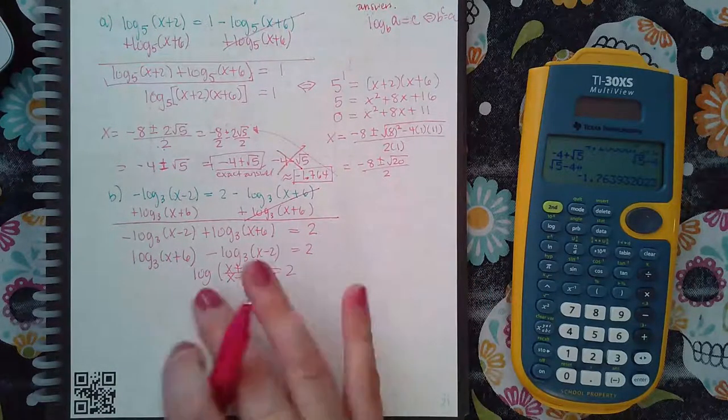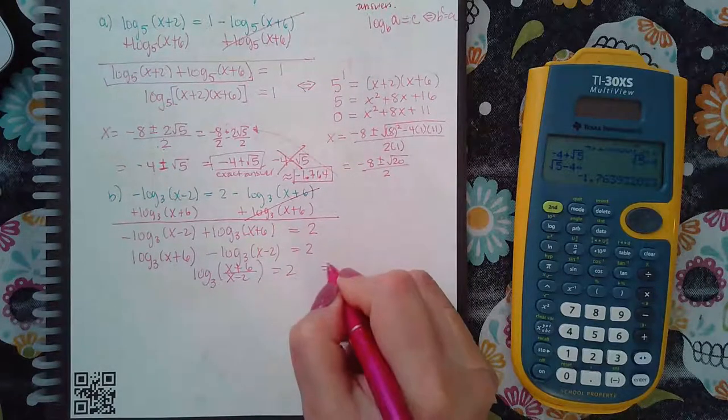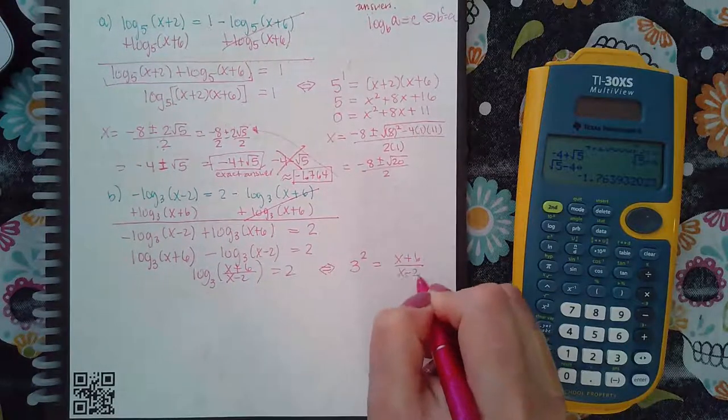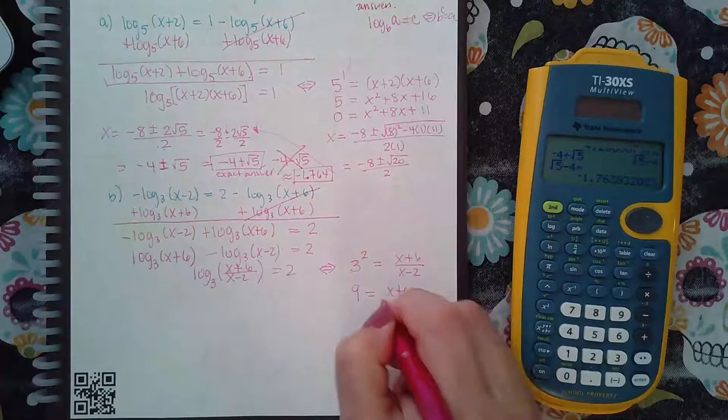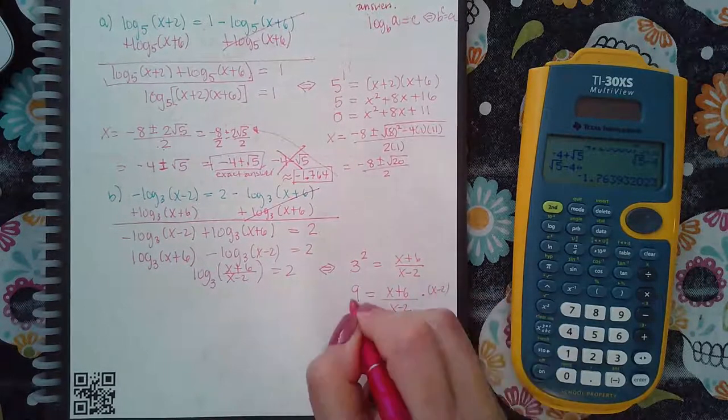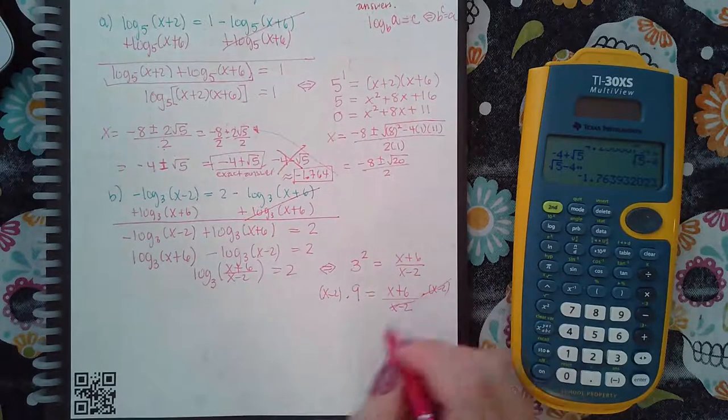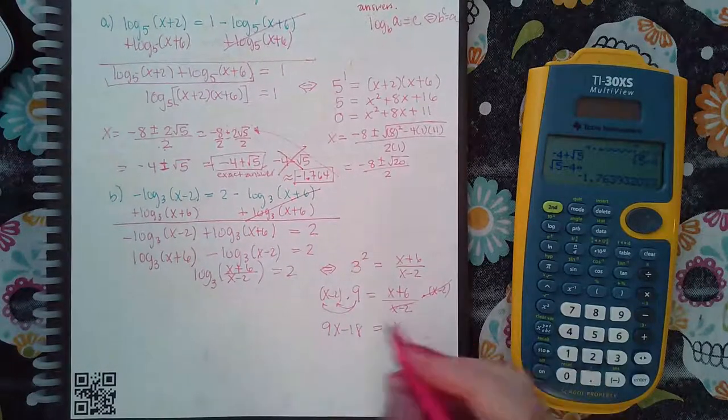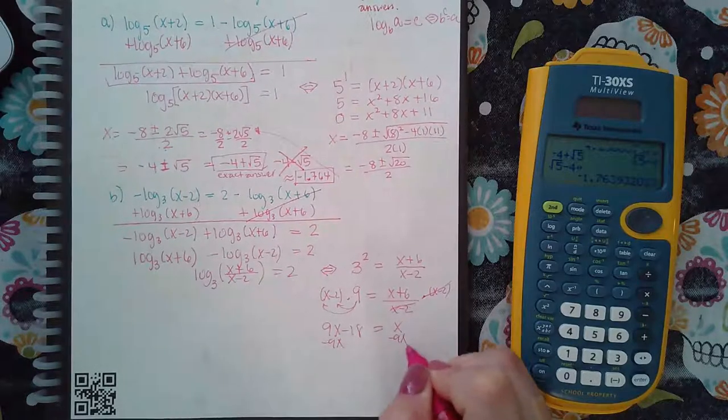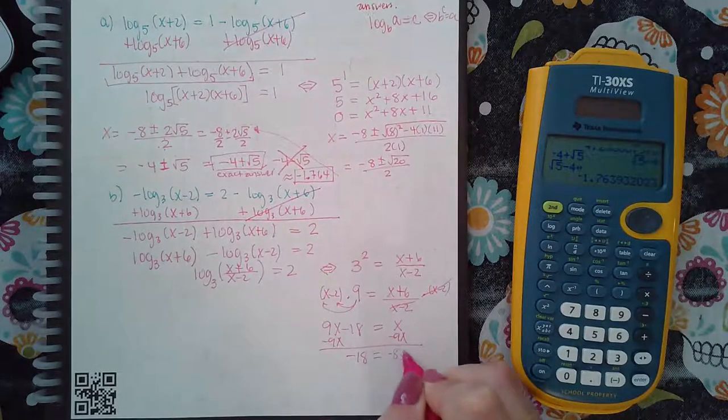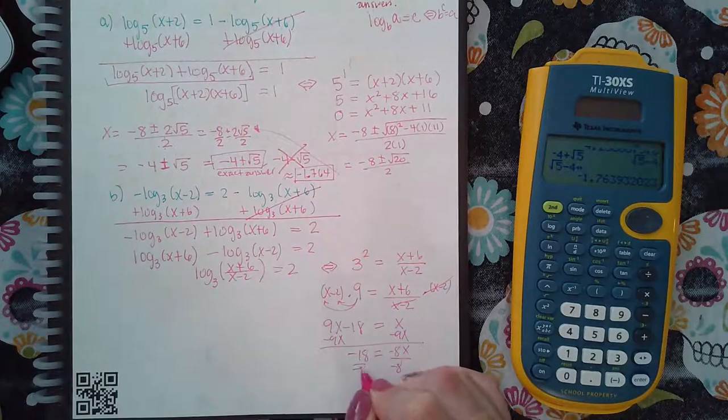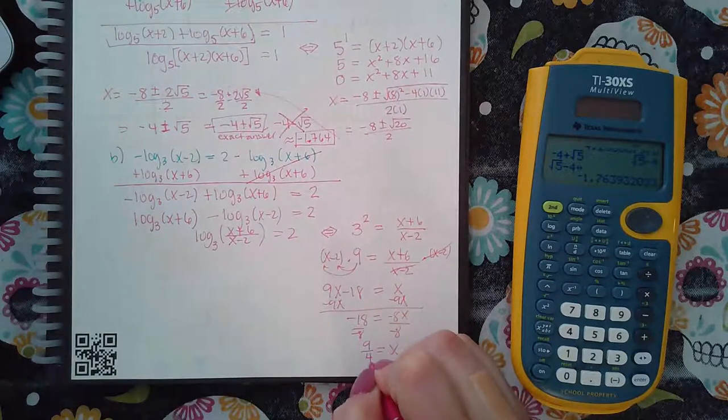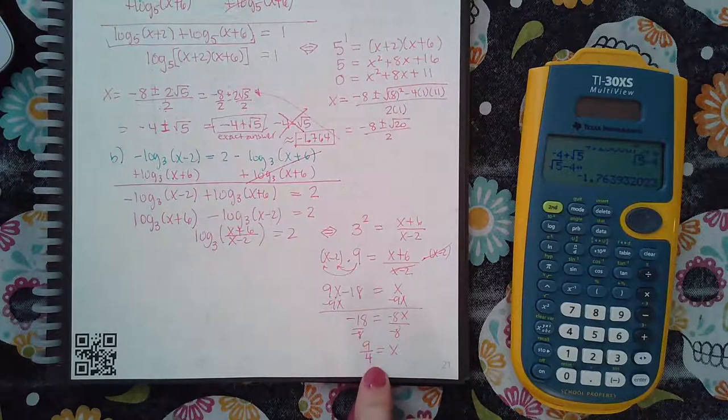So then from here, I'm going to go ahead and switch the forms over. So then when I switch the form over, this becomes three to the power of two equal to x plus six over x minus two. So that's nine equal to this fraction. I'm going to multiply both sides by the common denominator. So these cancel. I'm going to distribute my nine. So I get nine x minus eighteen equal to x plus six. I'm going to minus nine x on both sides. Negative eighteen equal to negative eight x. Divide by negative eight. I get that x equals, I can divide by two, so nine over four. And negative and negative will become positive. So I get positive nine over four.